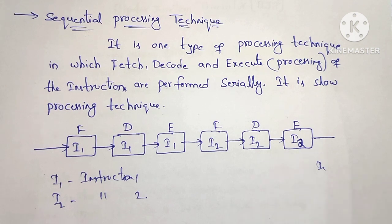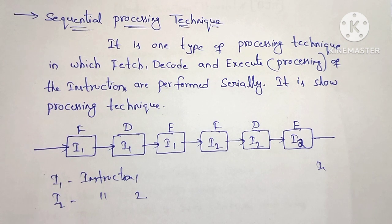The processor, CPU, or microprocessor fetches the instruction from memory. Fetching the instruction is followed by decode. Decode converts the instruction into a machine-readable form, and then it is executed.